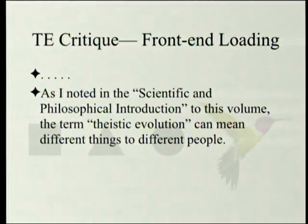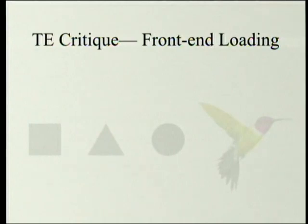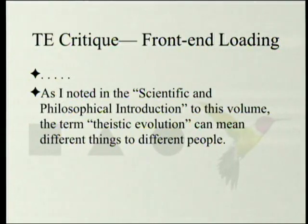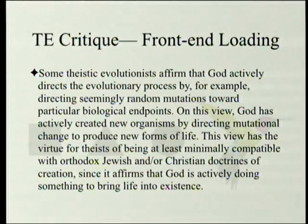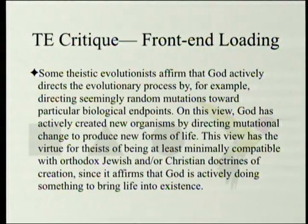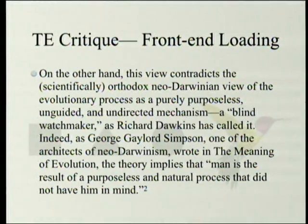The chapter begins — wherever you see green ellipses, that's where I'm skipping. As Meyer notes in the introduction, the term 'theistic evolution' can mean different things. Some theistic evolutionists affirm that God actively directs the evolutionary process by directing seemingly random mutations toward particular biological endpoints — God has actively created new organisms by directing mutational change. This view has the virtue of being at least minimally compatible with orthodox Jewish and Christian doctrines of creation, since it affirms God is actively doing something. On the other hand, it contradicts the scientifically orthodox neo-Darwinian view of evolution as a purely purposeless, unguided, undirected mechanism — a blind watchmaker, as Richard Dawkins has called it.